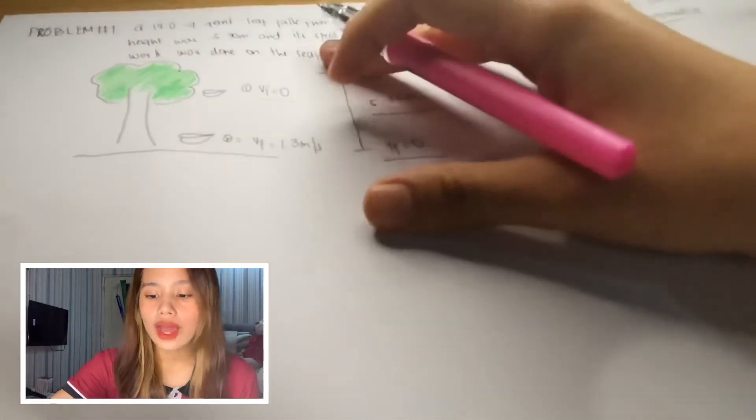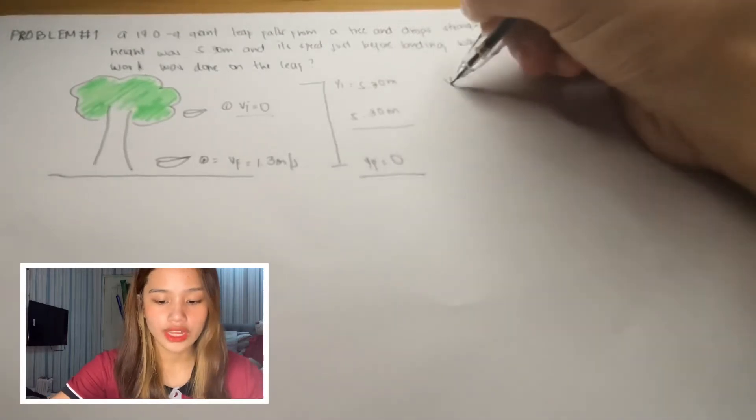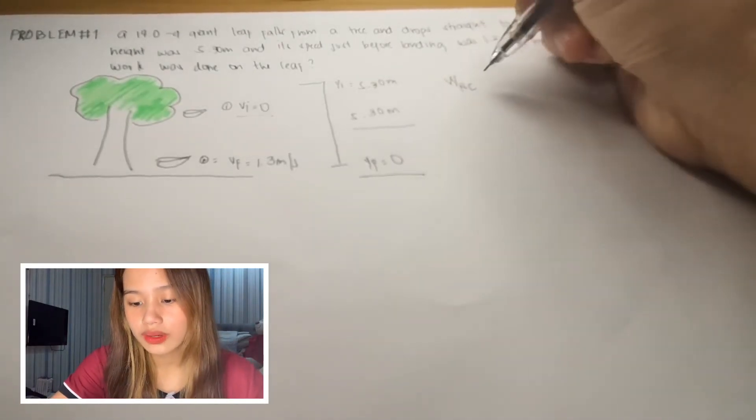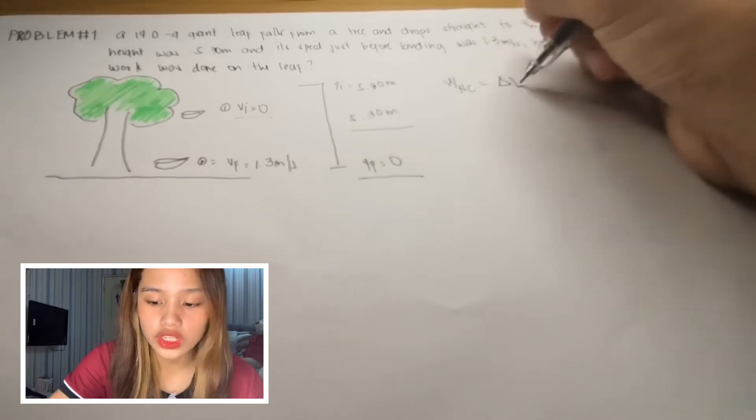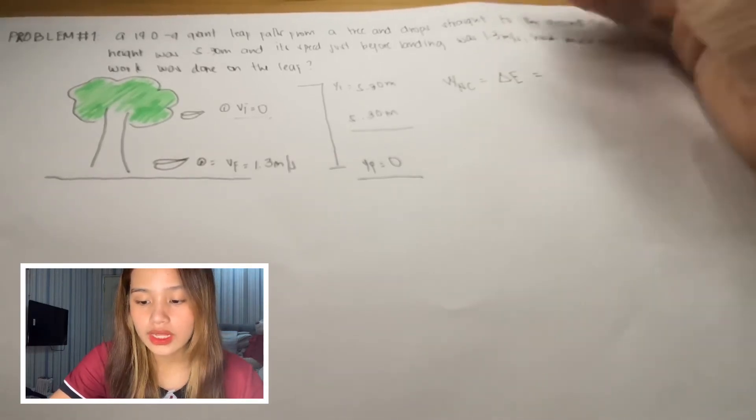So what we're looking for here is the total non-conservative work happening on the leaf. So here is our equation for that. Work done by non-conservative force is equal to total change in mechanical energy.